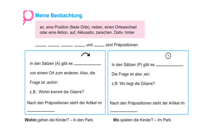And here in den Sätzen gibt es eine Position. Die Frage ist wo — wo liegt die Gitarre? Where is the guitar? Nach den Präpositionen steht der Artikel im Dativ. The Artikel goes in the Dativ case. And this is what we have done so far.